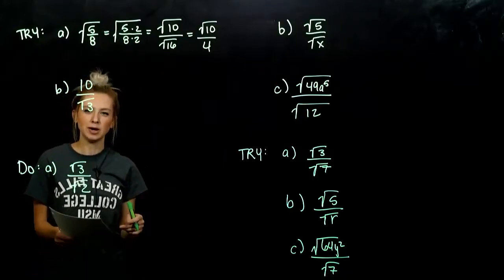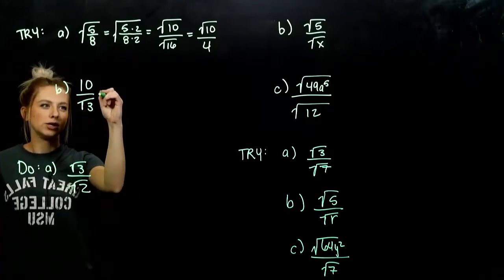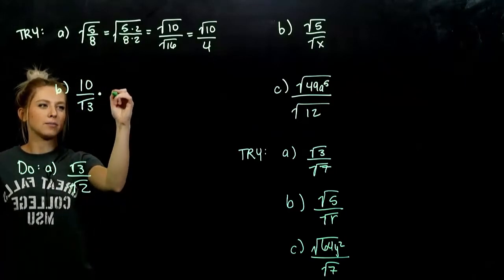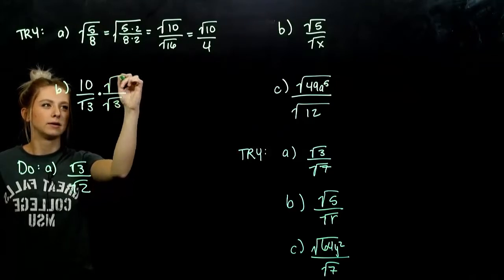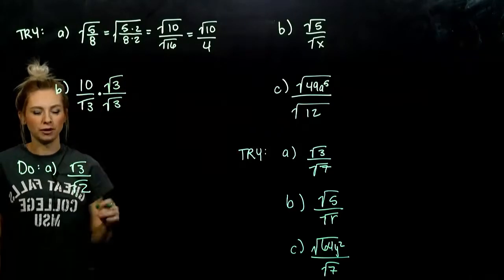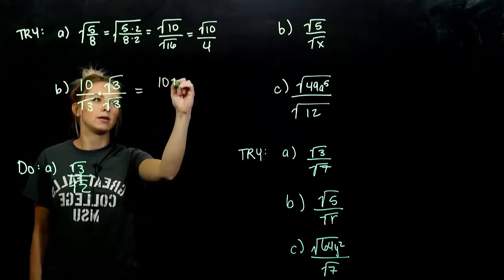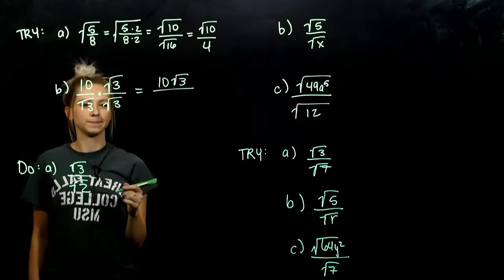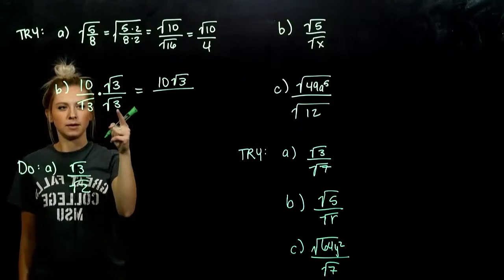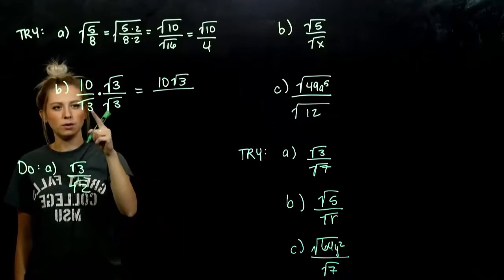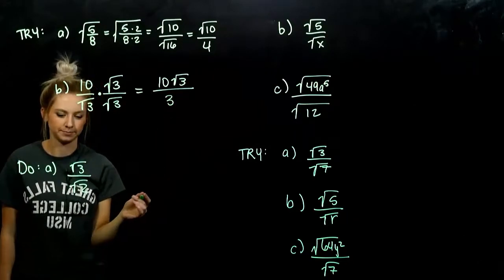For part B, I only have a radical living down below, so I should use the second method — multiply on the outside by whatever is down there. Out of the top, we get 10 root 3. Down below, I've got the square root of 3 squared, which is 3. Done.